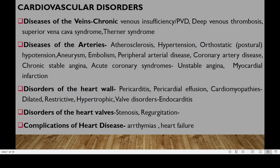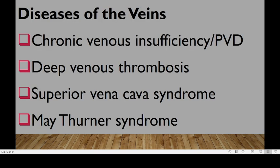From there, we'll proceed to disorders of the heart wall, including pericarditis, pericardial infusion, cardiomyopathies including dilated, restricted, and hypertrophic cardiomyopathies. We'll wind that section by looking at vascular valve disorders, more so endocarditis. Then disorders of the heart valves, looking at anomalies that lead to stenosis and regurgitation. Later, we'll look at complications of heart diseases including arrhythmias and heart failure.